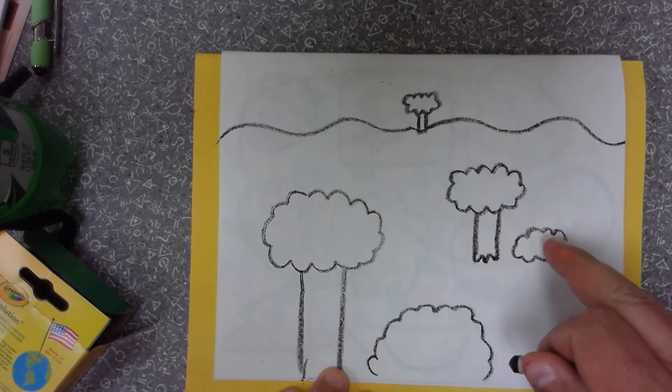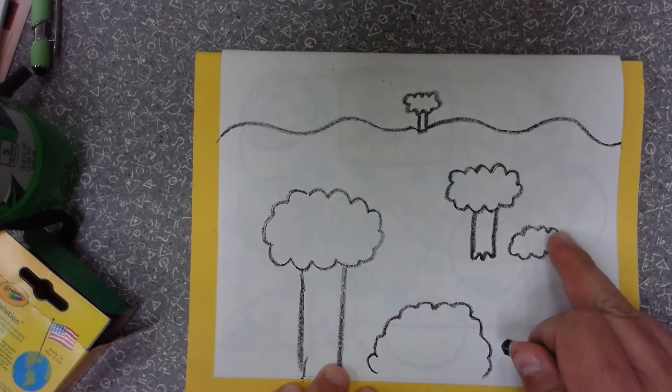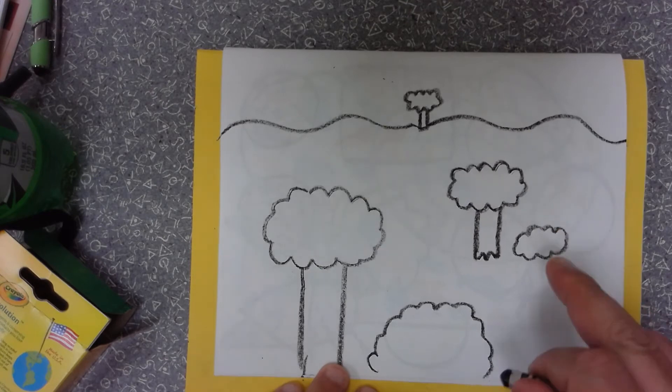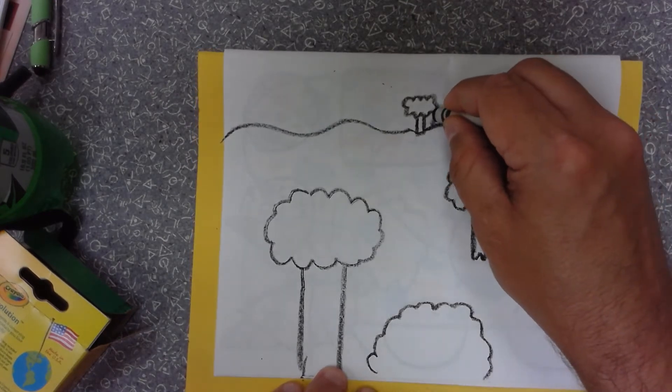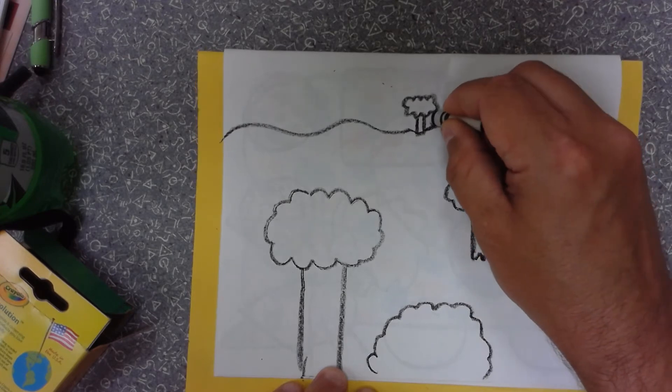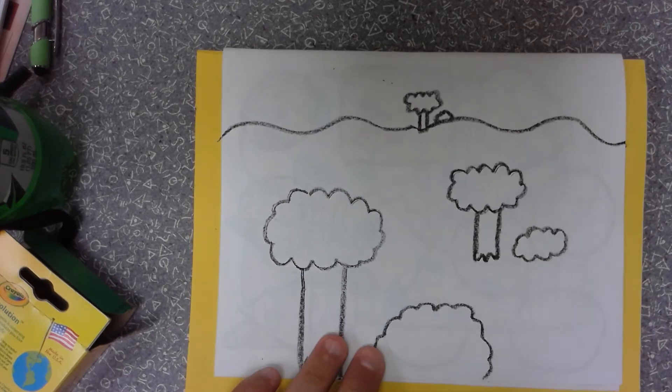These bushes can be the same size but this one looks like it's further away, so it looks smaller. If I was really standing here in real life, even though the two trees might be the same size, if one's further away it's going to look tiny to me.